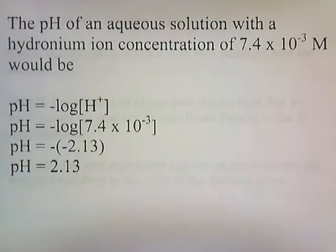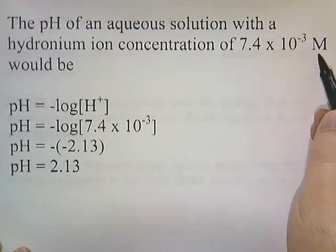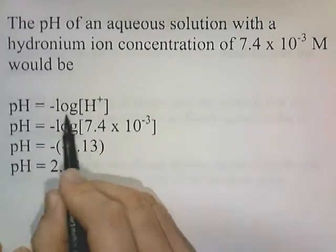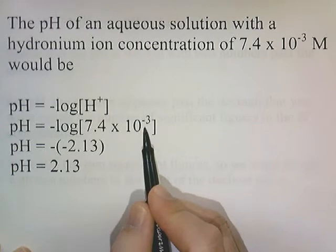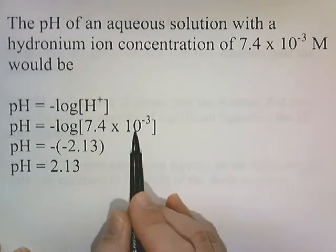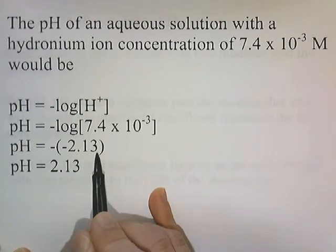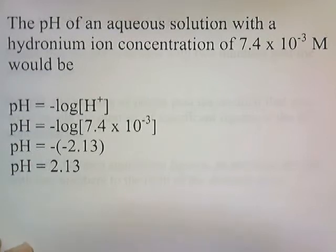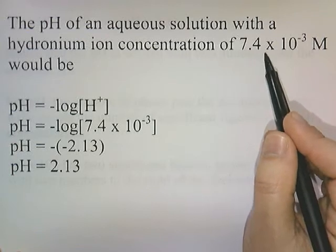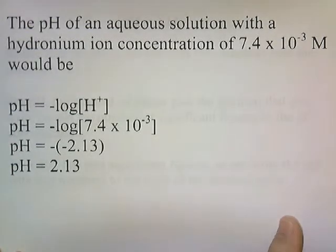Let's try a problem: find the pH of an aqueous solution with a hydronium ion concentration of 7.4 × 10⁻³ M. pH equals negative log of [H⁺], so pH equals negative log of 7.4 × 10⁻³. Enter this into your calculator and press log; you get −2.13. A negative times a negative gives a positive, so pH equals 2.13.